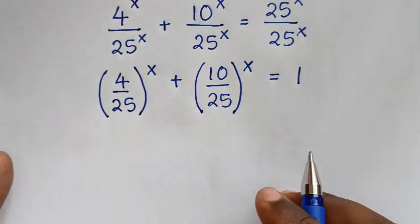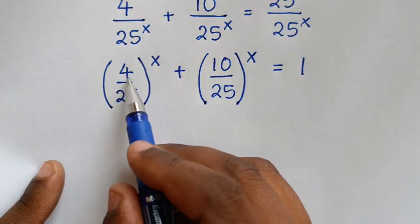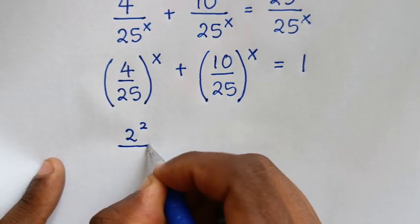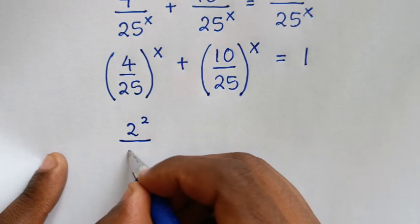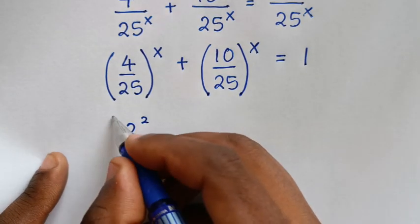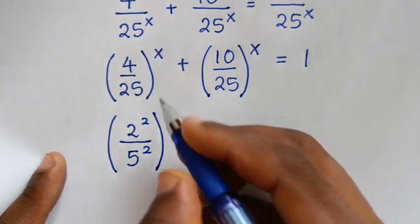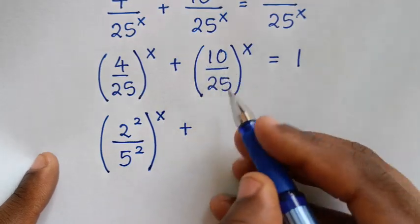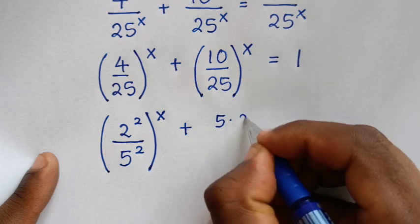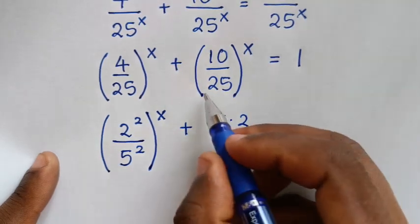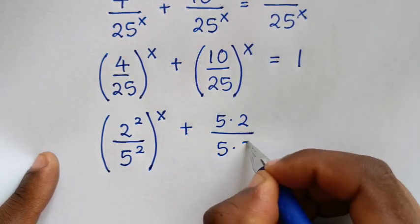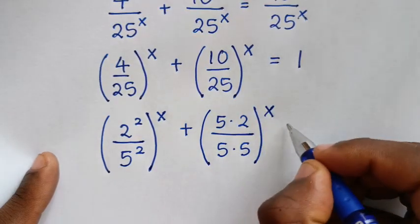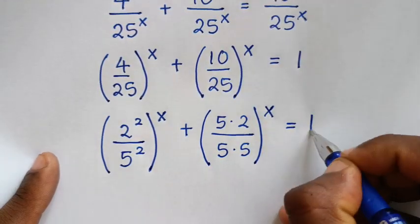In the next step, 4 is the same as 2 squared, and 25 is the same as 5 squared, so we write (2²/5²)^x. Also, 10 is the same as 5 times 2, and 25 is the same as 5 times 5, so (10/25)^x becomes (5×2 / 5×5)^x. This equals 1.